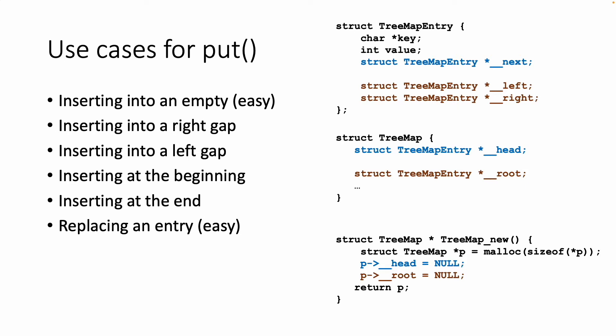Let's take a look at our data structures. We have simultaneously in the entry a left and a right, and we have a next because we are simultaneously maintaining a sorted linked list and a sorted tree. The tree map has a head and a root, that's pretty much it. In our constructor, we set the head to null, we set the root to null. We're empty. We don't have anything in the tree, we don't have anything in the linked list.